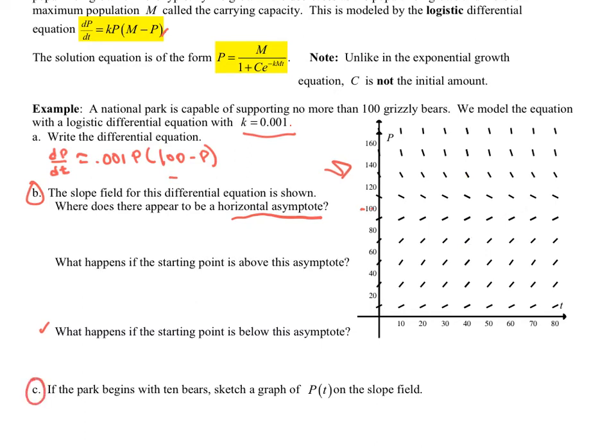Part C says, let's start with 10 bears. Sketch this graph, and so this would be the solution curve to this slope field. So if I start here at 10, and I don't have to necessarily go through these marks, but it sure looks like I can go through these marks. But I'm going to approach up here, and I'm going to go something like that. And so I'm going to start here at 10 bears and then I'm going to go up to 100, not going over 100.